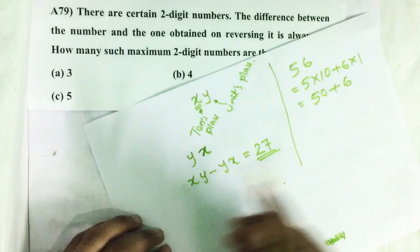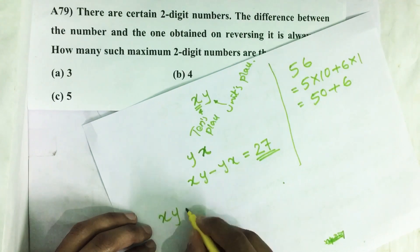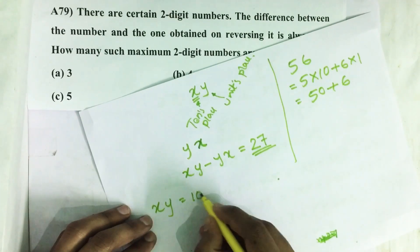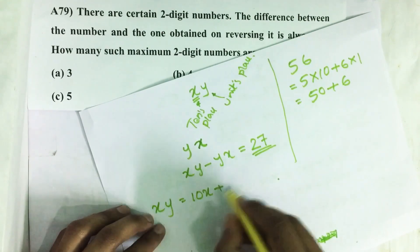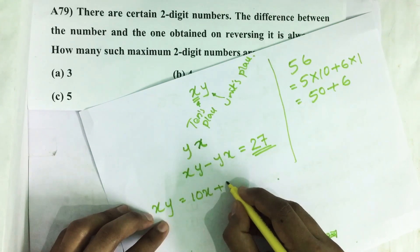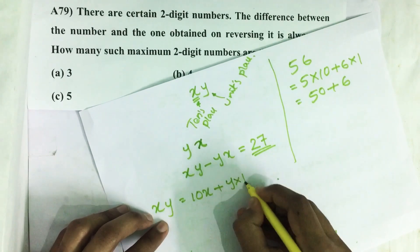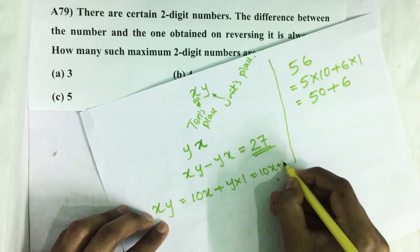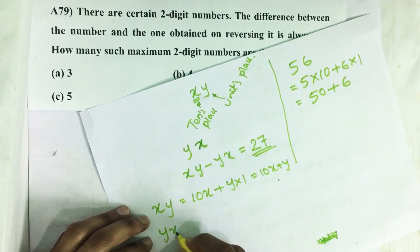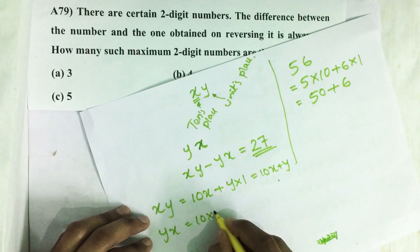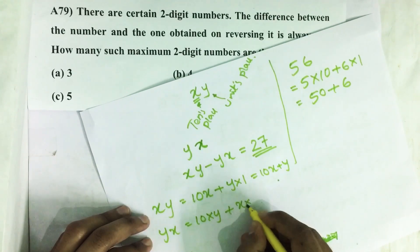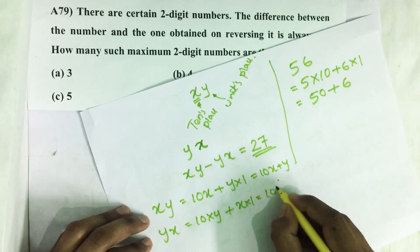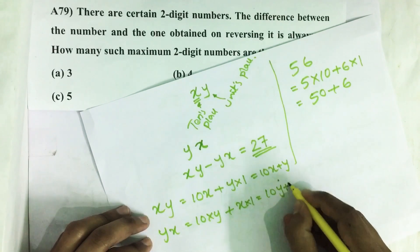The same way we can write XY as 10 into X plus Y into 1, which gives us 10X plus Y. Similarly YX we can write as 10 into Y plus X into 1, which is 10Y plus X.